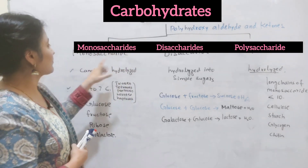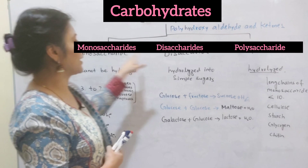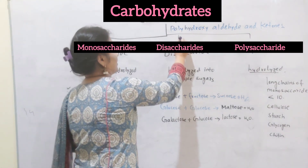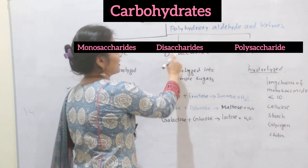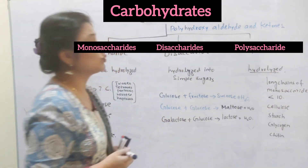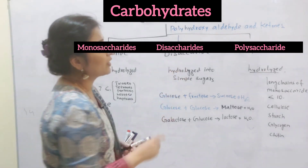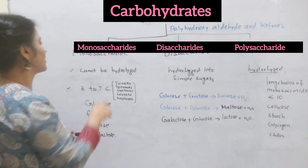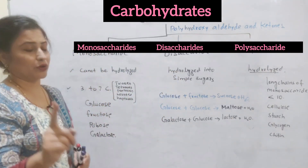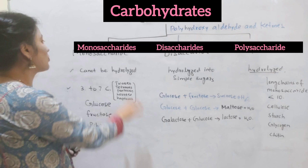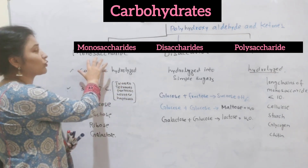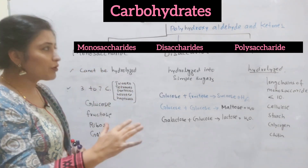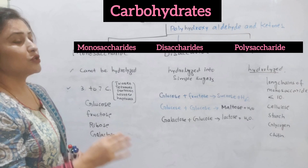Carbohydrates are classified as monosaccharide, disaccharide, and polysaccharide. Mono means one unit, di means two units, and poly means many units of saccharides. Monosaccharides are those which are actually one unit and cannot be further hydrolyzed into simpler sugars.